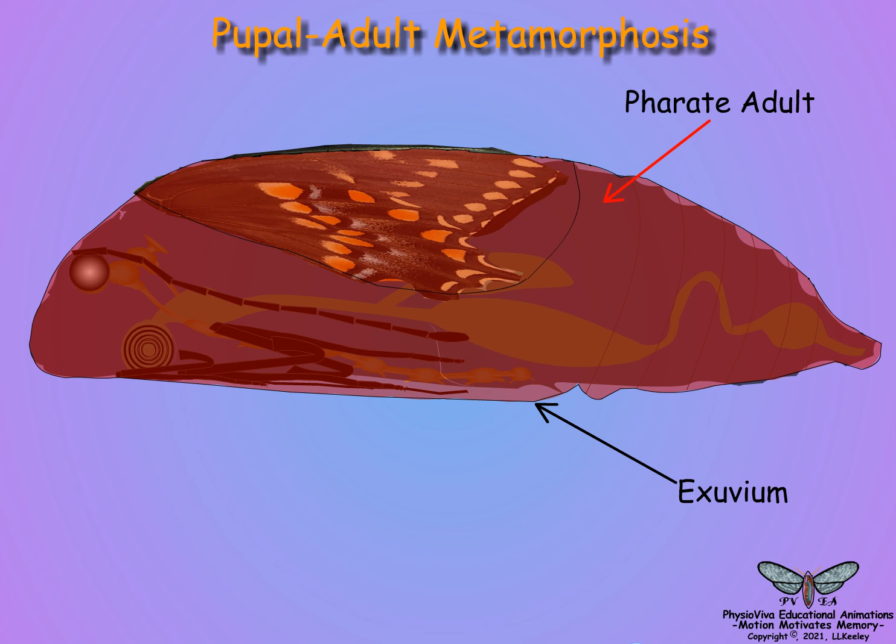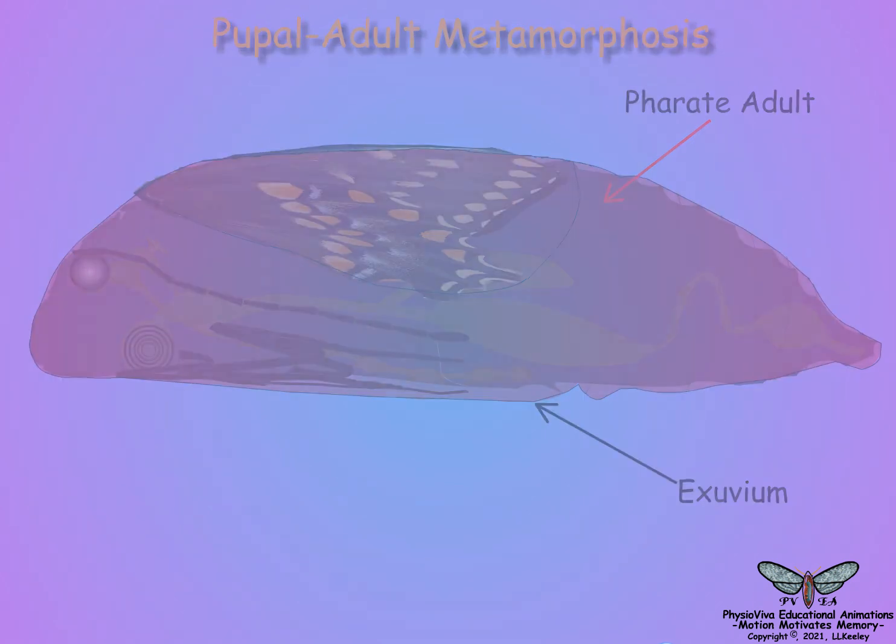In most species, the metamorphic changes are exhibited by the same epidermal cells in larvae, pupae, and adults. The next scene will address the changes in the hormone patterns and their metamorphic effects.